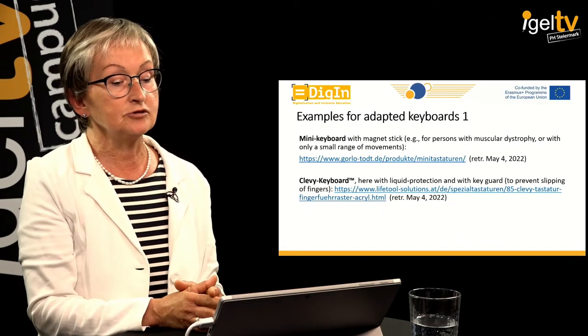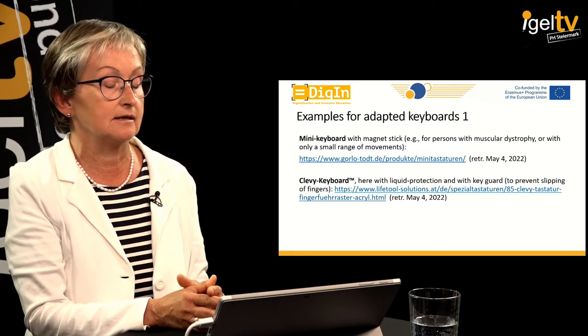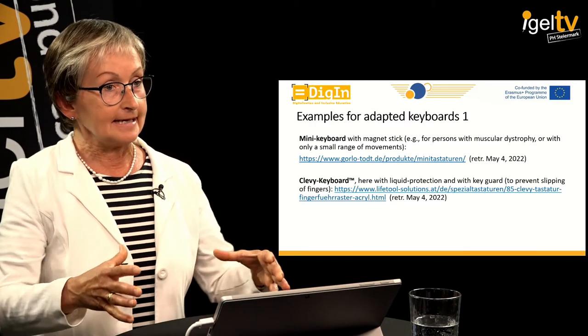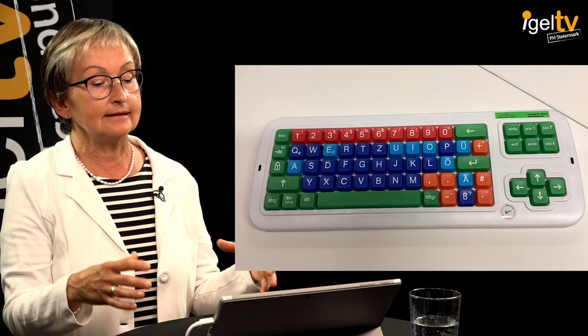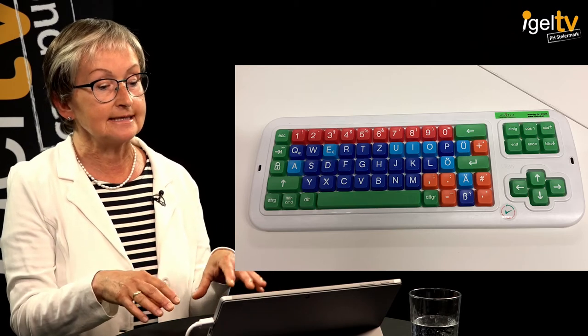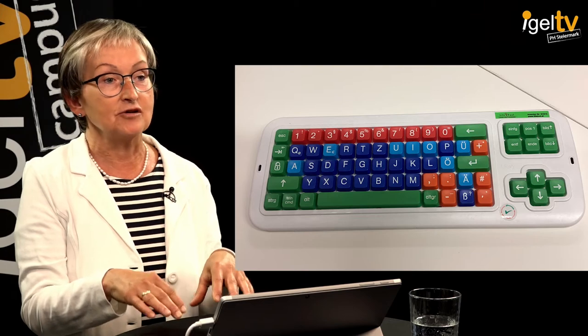Another keyboard that's used quite frequently in our schools is the so-called Clevi keyboard. It's a very stable keyboard you can attach to any computer basically. Its specific features are that the keys come in different colors — vowels are dark blue, consonants are lighter blue. You also have a liquid protection: a very thin acrylic sheet placed above the keyboard, because many children with cerebral palsy have the problem of drooling and cannot control their saliva.